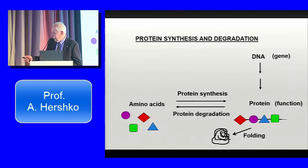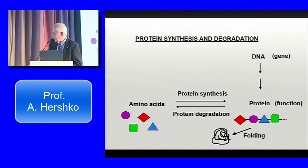As you may remember, proteins are made of building blocks — amino acids — and we have thousands of different proteins, each of which has a different function after being assembled from these building blocks. The difference between the proteins is in the sequence in which the amino acids are arranged in this chain. The sequence is determined by the DNA, by our genes. So the gene is the blueprint, and the protein carries out the functions.